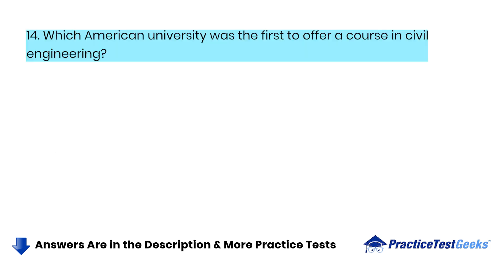Which American university was the first to offer a course in civil engineering? A. Yale. B. Rensselaer Polytechnic Institute. C. Harvard. D. Michigan.